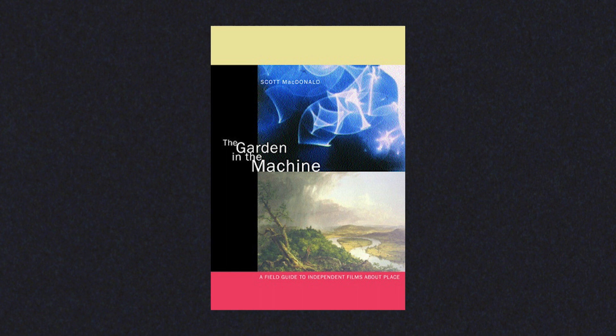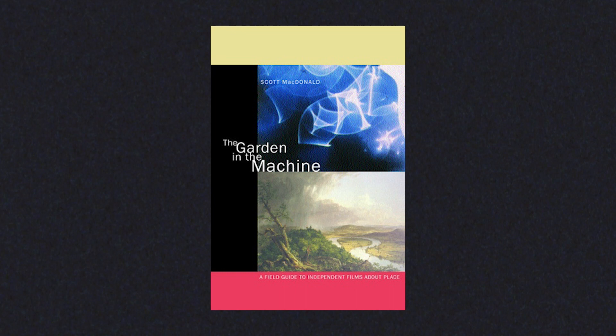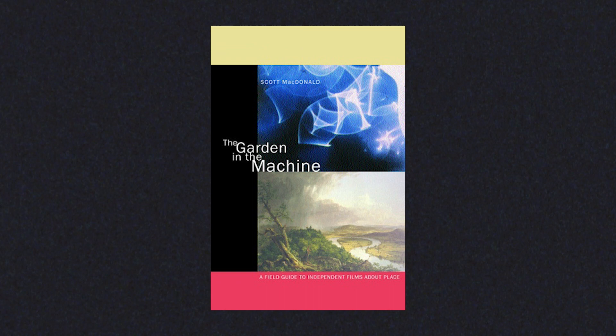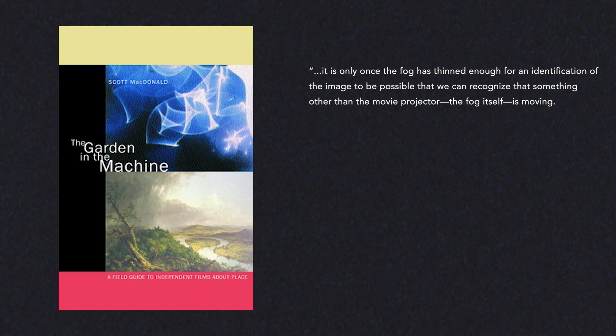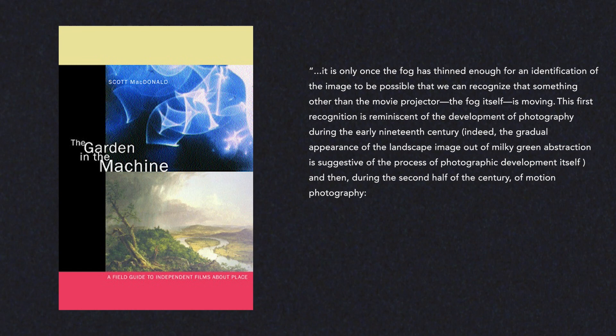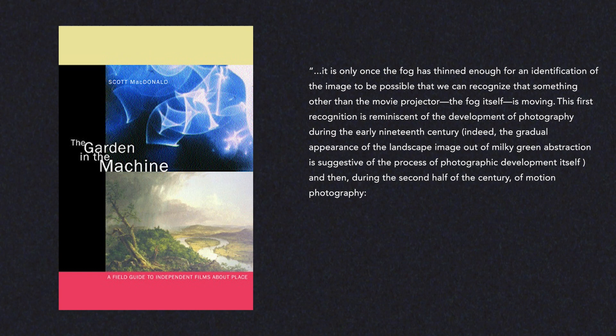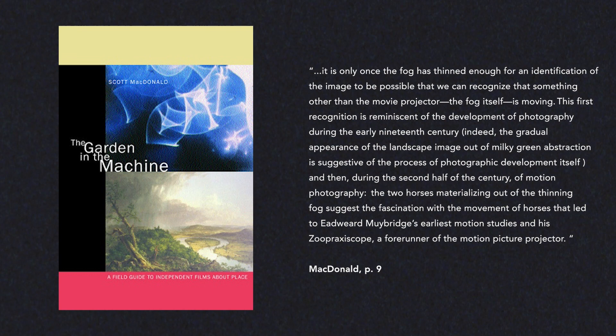In his book The Garden in the Machine, Scott McDonald makes the case that despite the deceptive simplicity of the film, the compositional elements of Fogline are carefully considered and conceptually rich. In particular, McDonald notes that the film recalls the technological and aesthetic lineage of the filmic and photographic medium, writing: "It is only once the fog has thinned enough for an identification of the image to be possible that we can recognize that something other than the movie projector — the fog itself — is moving. This first recognition is reminiscent of the development of photography during the early 19th century. Indeed, the gradual appearance of the landscape image out of a milky green abstraction is suggestive of the process of photographic development itself. And then, during the second half of the century, of motion photography — the two horses materializing out of the thinning fog suggests the fascination with the movement of horses that led Edward Muybridge's earliest motion studies."